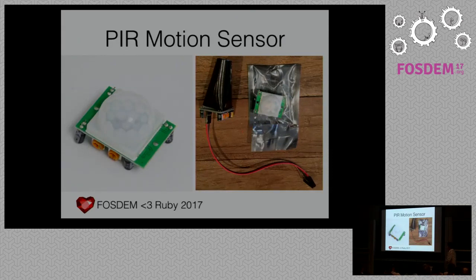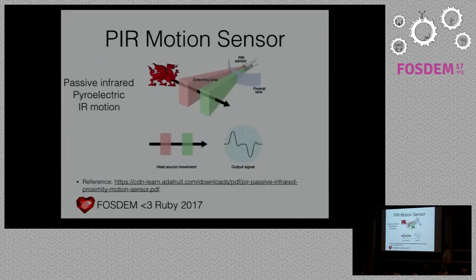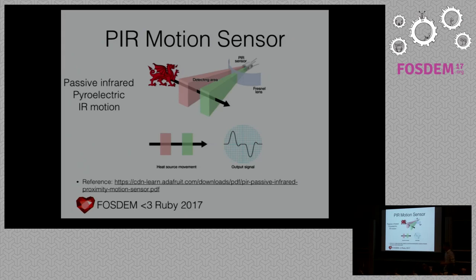Now, the infrared motion sensor. I strongly suggest reading the PDF reference if you're curious about it. Basically the infrared sensor has two areas — red and green, or hot and cold. When heat passes through the hot area, the sensor generates a high voltage. When you leave and pass through the cold area, it generates a low voltage. That's roughly how the sensor works, though the PDF has much more detail.